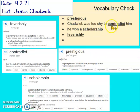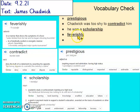'Chadwick was too shy to contradict him.' So we've heard this word before in a couple of our texts, definitely the Charles Darwin one. Contradict means deny the truth by asserting the opposite — so it means you think differently to somebody else. So Chadwick was too shy to contradict him, too shy to put him right, really.